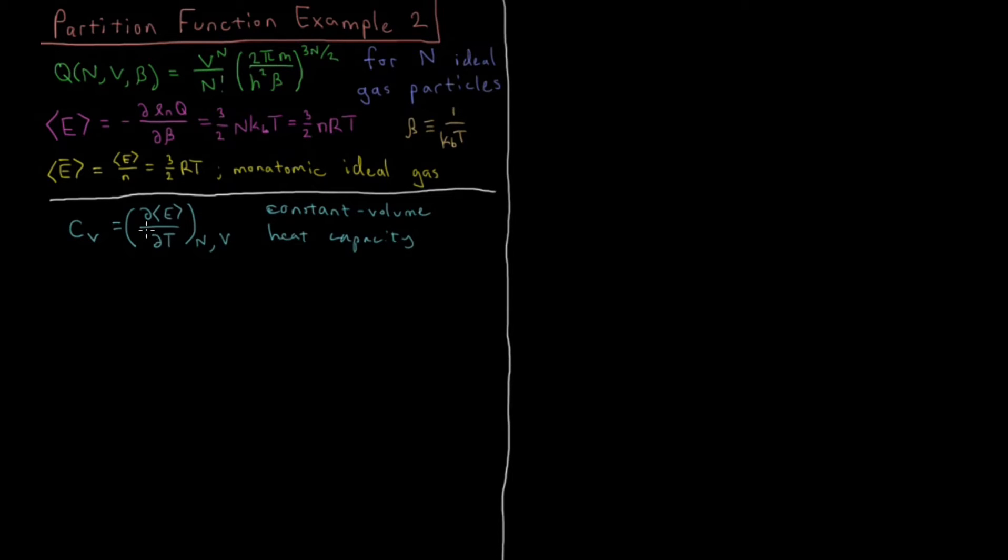So for the heat capacity, we have our energy quantity here that we calculated from the previous video. So we have that E is going to be 3 halves nRT. And if we take the partial derivative of that with respect to temperature, partial with respect to T of 3 halves nRT, well that's just linear in temperature, so it's just going to be left with the coefficient out in front, which is 3 halves nR.